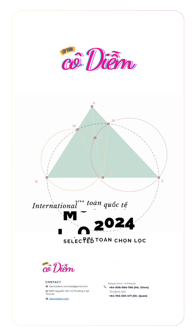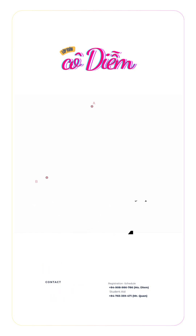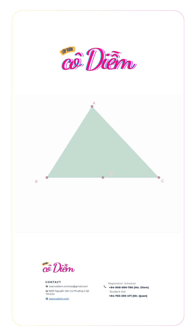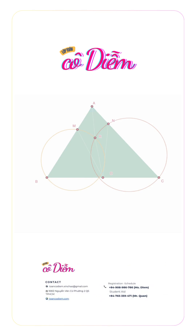IMO 2004. Given an acute triangle ABC, the circle with diameter BC intersects sides AB and AC at points M and N respectively. Let O be the midpoint of side BC. The angle bisectors of angles BAC and MON intersect at point R. Prove that the circumcircles of triangles BMR and CNR have a common point lying on side BC.